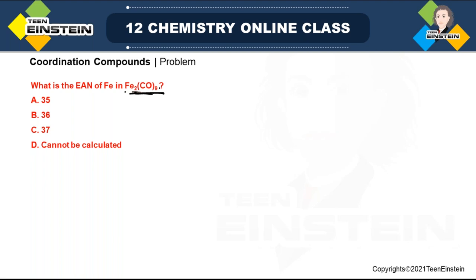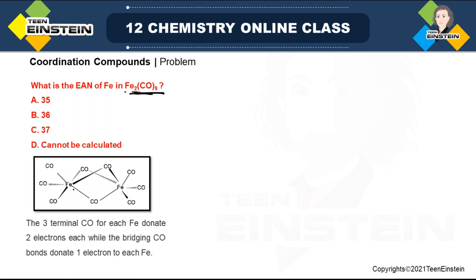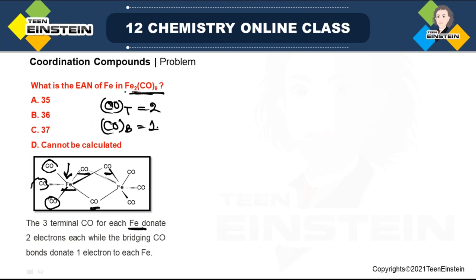This is the structure of Fe₂(CO)₉. There is no metal-metal bond. Focusing on a single Fe, it is connected to three terminal CO and three bridging CO. For terminal CO, it donates two electrons; for bridging CO, it donates one electron. So three terminal gives six electrons and three bridging gives three electrons — total nine electrons from ligands.